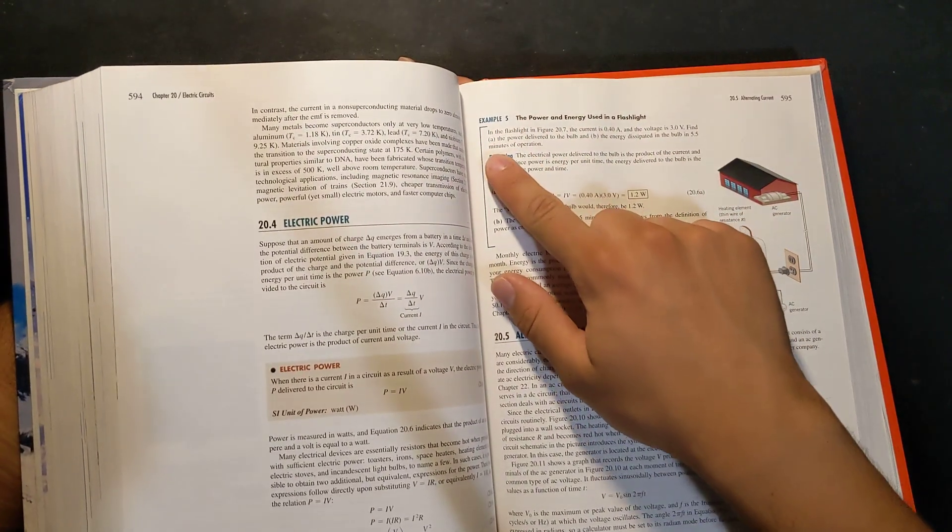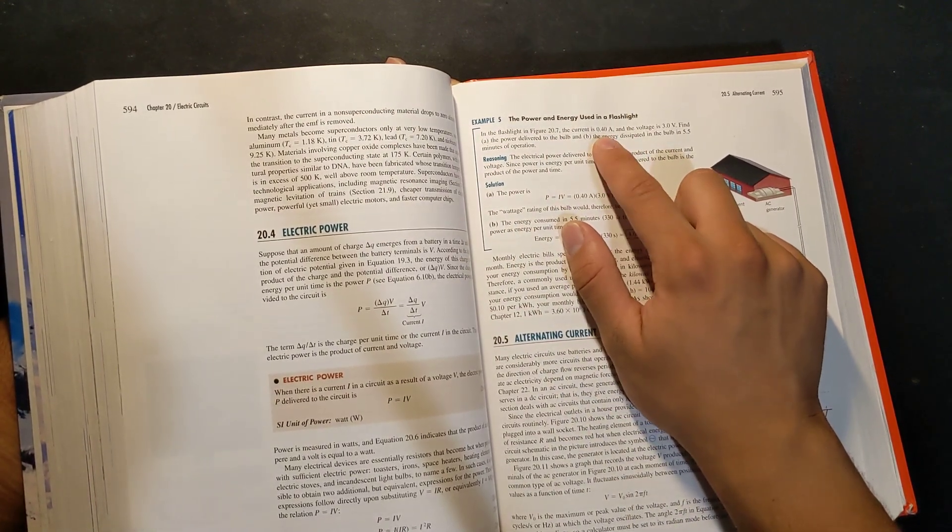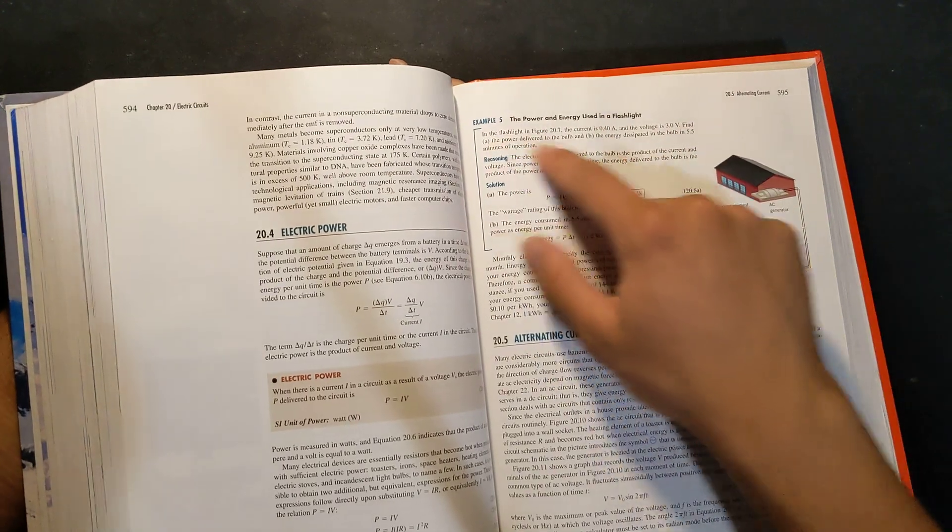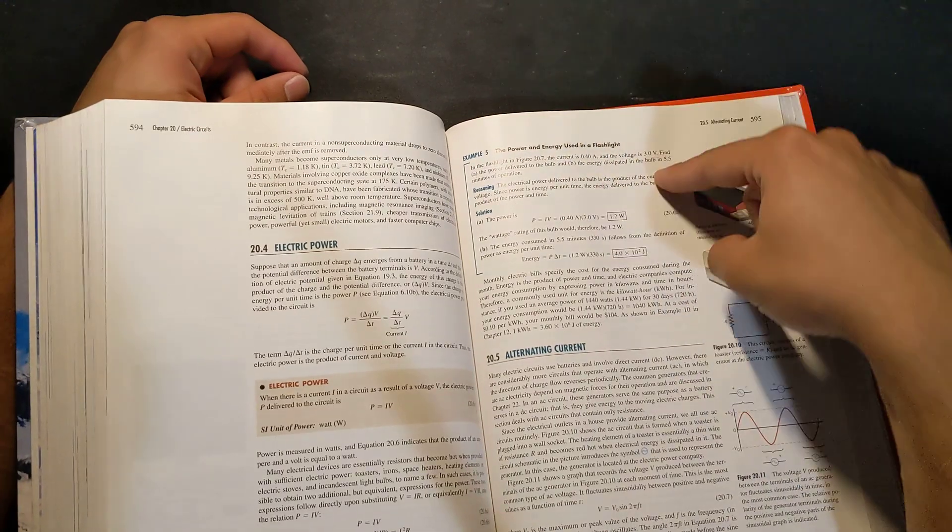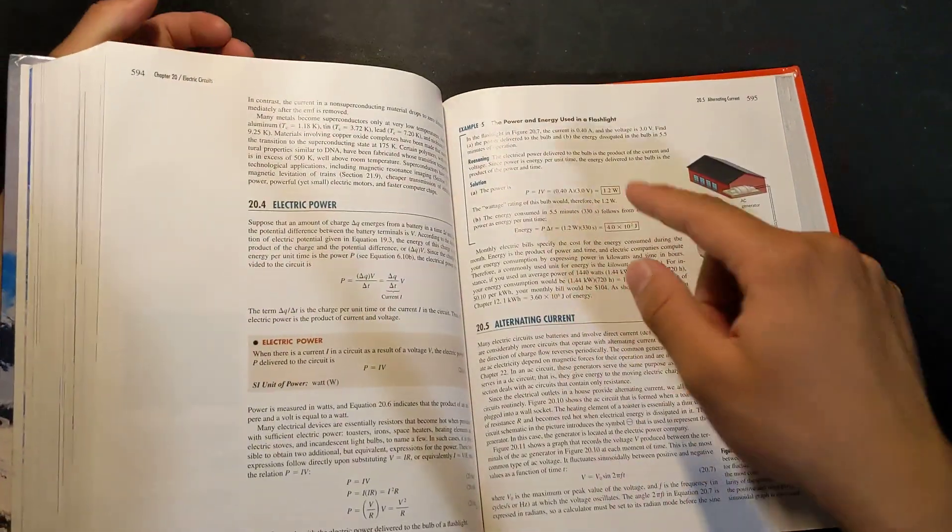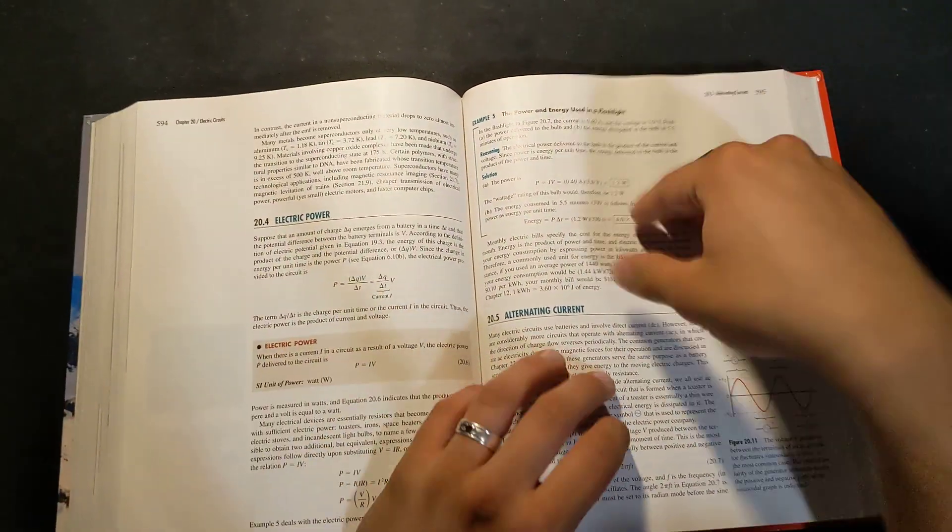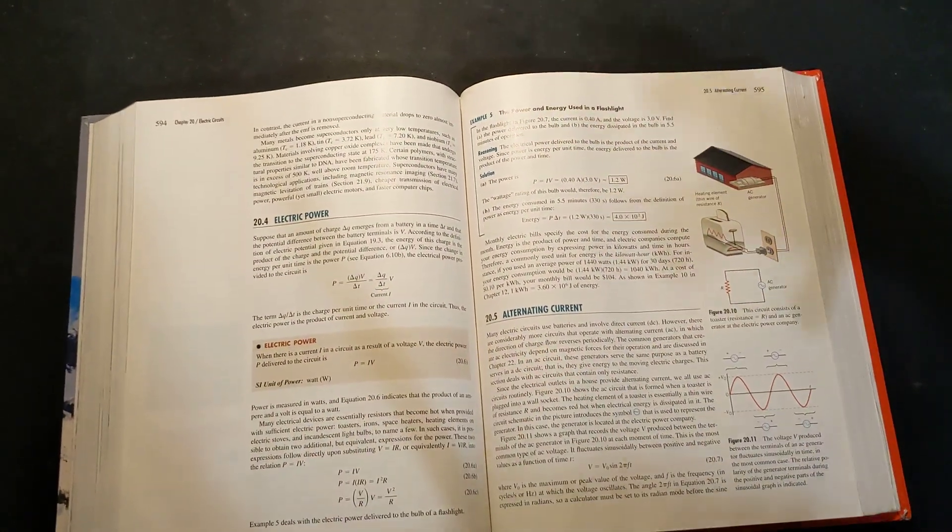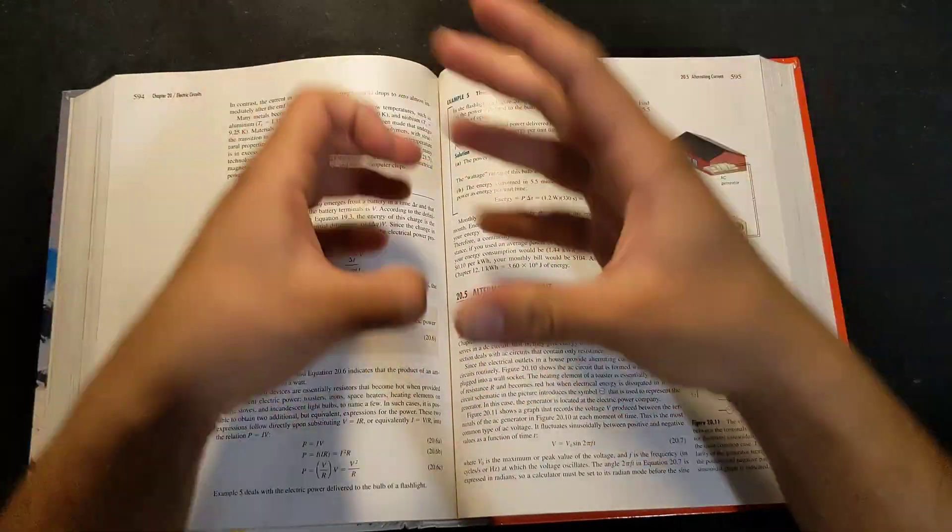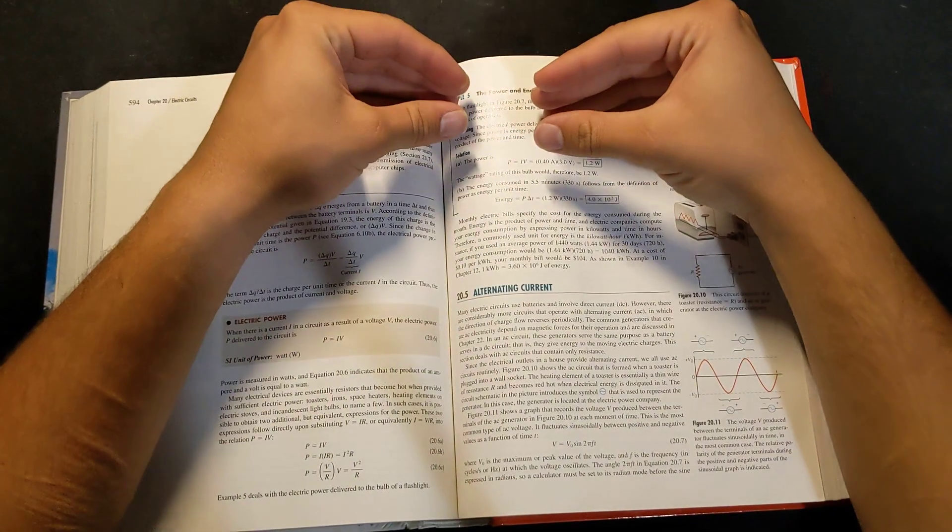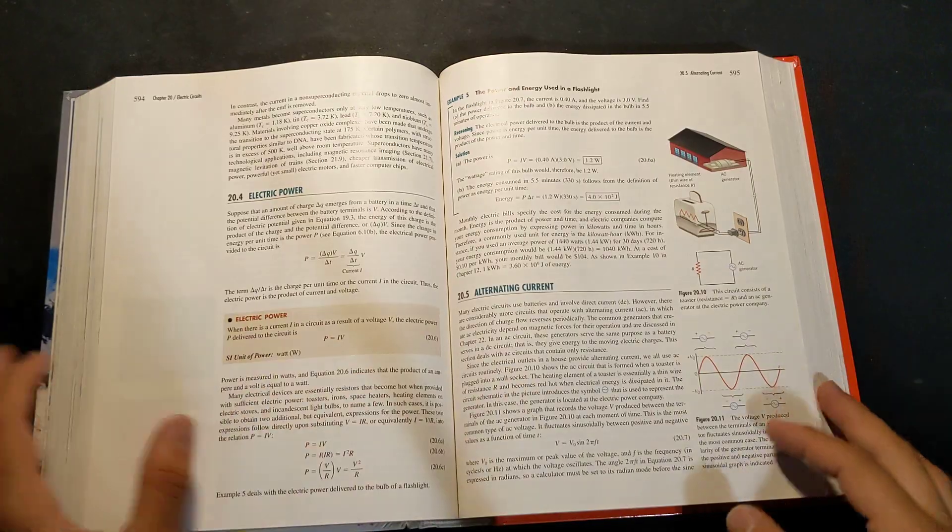Because you can read an example like this. And it says, in the flashlight in figure 2.7, the current is 400 milliamps. The voltage is 3 volts. Find the power delivered to the bulb. And you can do that really quickly. That'd be, what, 1.2 watts. And there he is. So there's softball questions that are useful to know. And that's the cool part. You can do this now. Get a solidification, this feeling of confidence in physics. And when you are confident that you are competent, you can move on to more advanced physics textbooks. But you'll have this background to fall back on.